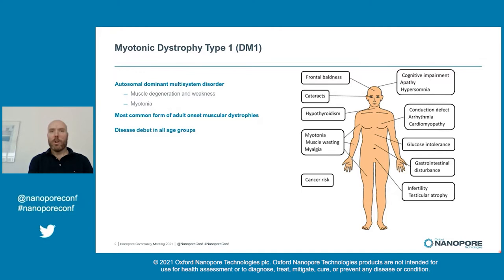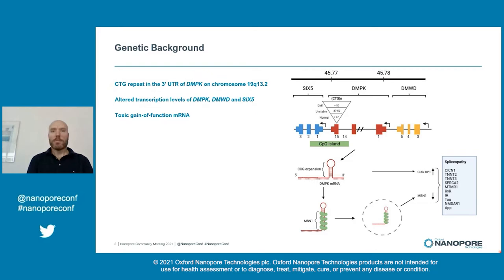Myotonic dystrophy type 1, or DM1, is a multisystemic disorder, but the primary findings are muscle degeneration and weakness, and myotonia. DM1 can be congenital, or it can have a disease debut in all age groups, and it is the most common adult onset muscular dystrophy. The genetic background of DM1 is an expansion of a CTG repeat in the 3' UTR of the DMPK gene, where it directly alters the transcription of DMPK and its neighbouring genes. But the DMPK transcript also becomes a toxic gain-of-function mRNA that leads to splicing deregulation and leads to this multisystemic disorder.